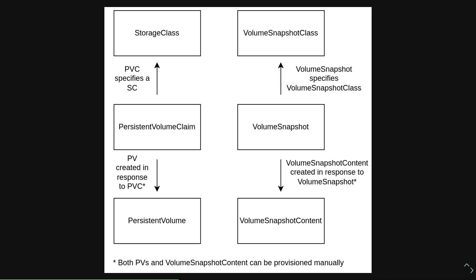A user might request a storage class for production that gets provisioned on faster storage, whereas development-based requests might get provisioned on slower storage. PersistentVolumeClaims are requests for storage, and if that request is valid and can be satisfied, a PersistentVolume will be created in response. The PersistentVolume is the actual underlying storage that's provisioned and then mounted inside a container.